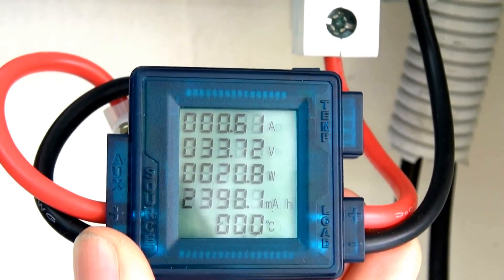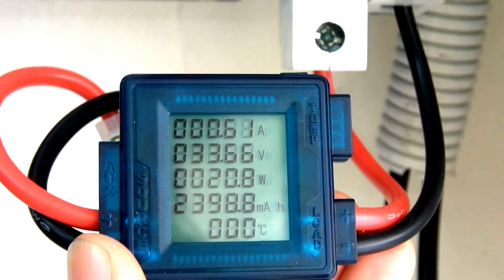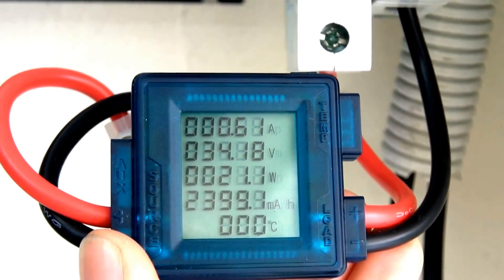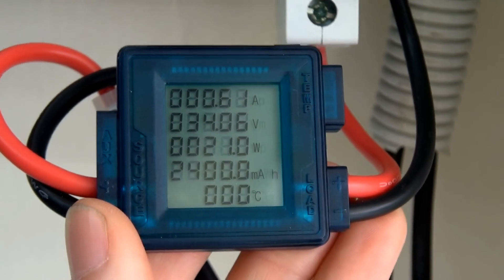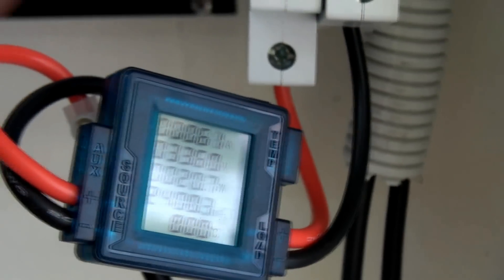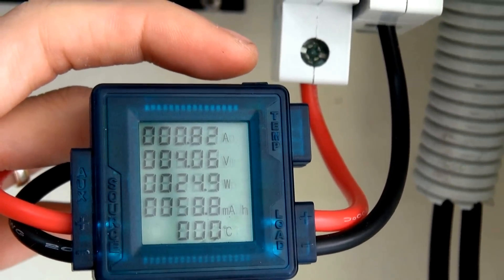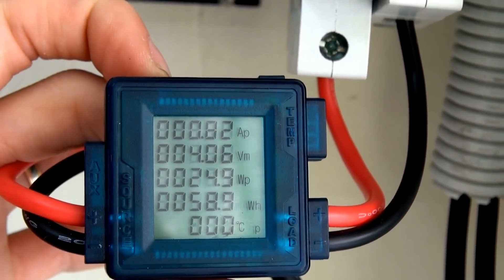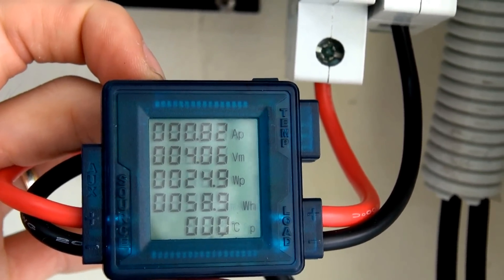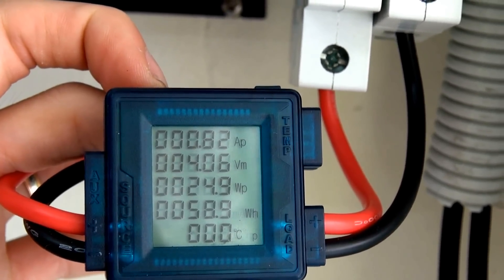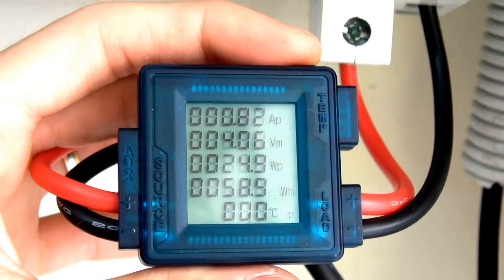As you can see now, the watt meter is actually showing that the PV is providing 0.6A, 34V. The watt right now is 21 watts. And for example, you press here, switch, you can see what is the watt peak, the changes, and the watt hour.